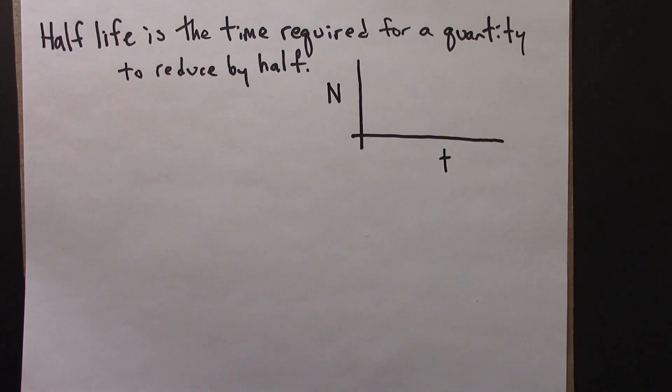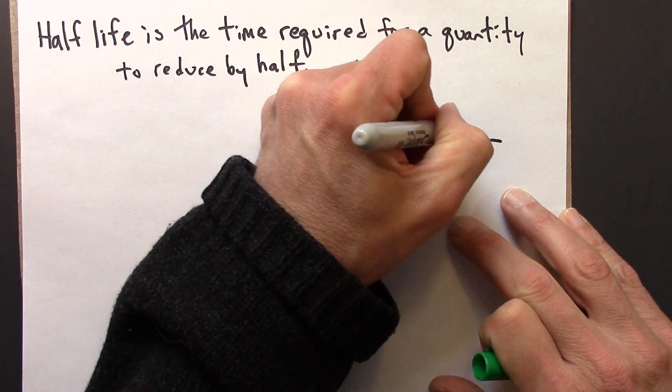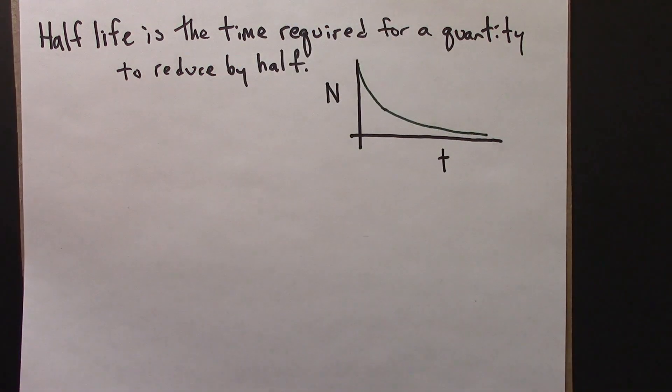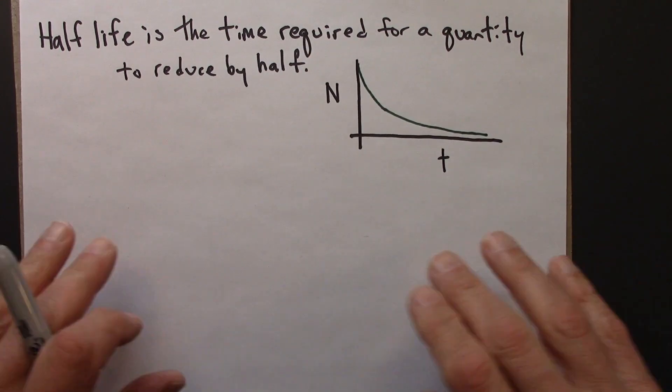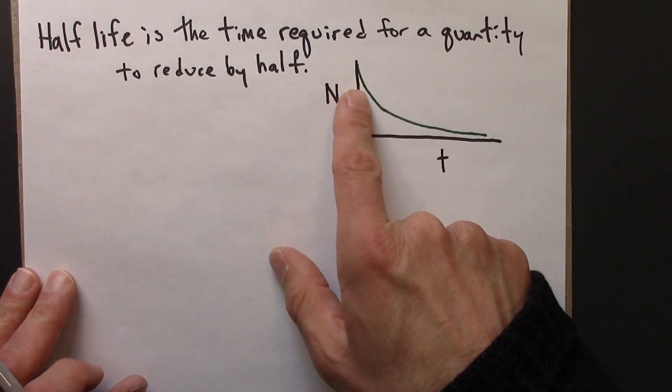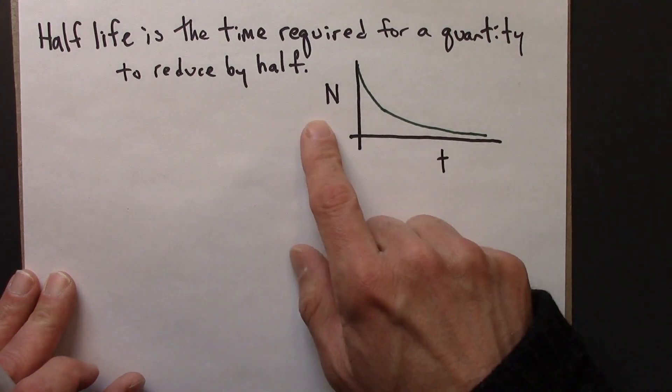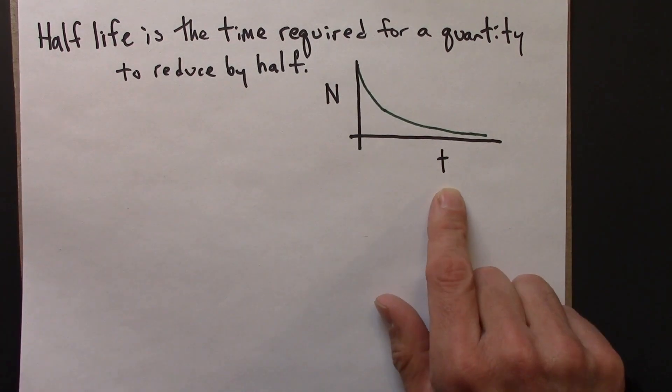And that's a situation where something is decaying with a constant probability per unit time. And that will lead to an exponential decay like this. So maybe there's a certain probability per minute or per day that an object breaks or decays. The amount of that object left is going to follow this decaying exponential. So N is the amount and t is time.